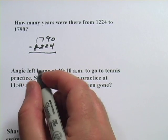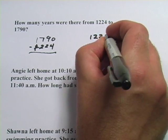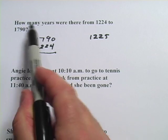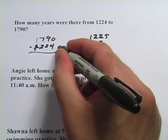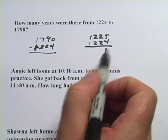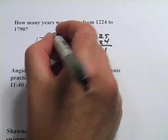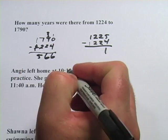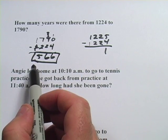If you doubt that, you could think about this: 1224 — one year later it would be 1225. I know one year has passed between 1224 and 1225. So if the question said how many years from 1224 to 1225, I would simply subtract and get 1, which I know to be true. Using the same principle: 1790 minus 1224. 10 minus 4 is 6, 8 minus 2 is 6, 7 minus 2 is 5, 1 minus 1 is 0. So it's 566 years between 1224 and 1790.